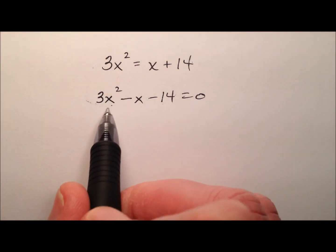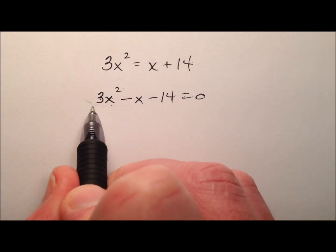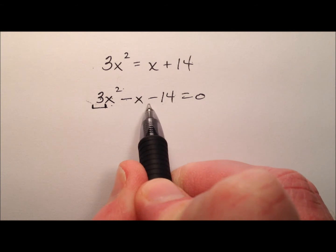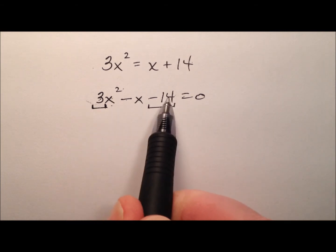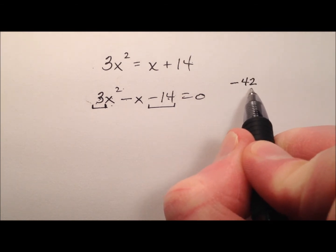Anyway, so the AC method. We have Ax squared plus Bx plus C. That's the standard form for a quadratic function or quadratic expression. So we have our A and we have our C, and we're going to multiply these together. 3 times negative 14, and that'll be negative 42.